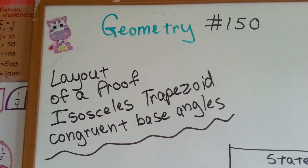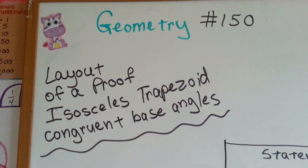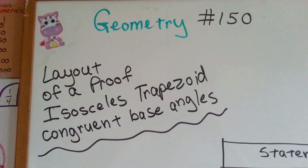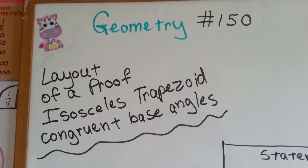Geometry number 150: Layout of a Proof — Isosceles Trapezoid Congruent Base Angles.